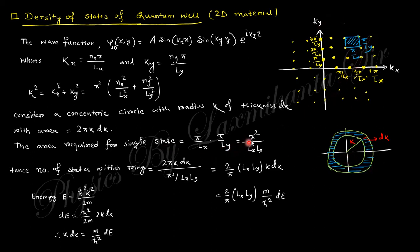The area required for a single state within this is π/Lx times π/Ly, so π² LxLy. Hence the number of states within this ring is the total area divided by area for a single state.